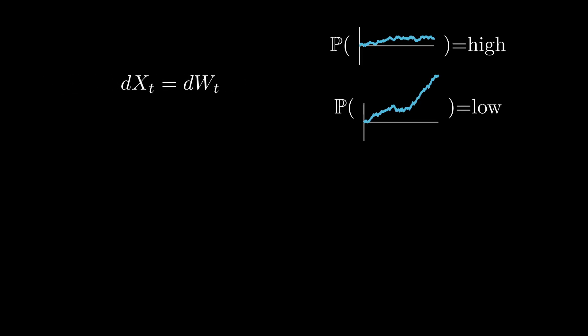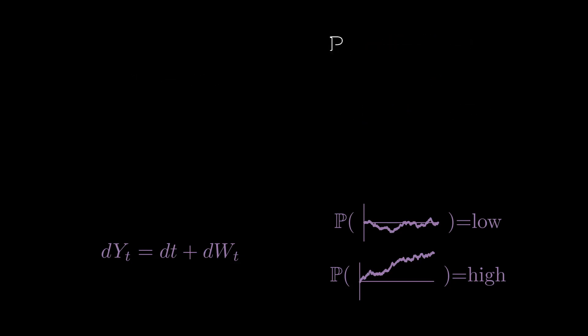Let's rewrite this as a pretty simple stochastic differential equation. Now, what happens if we add a drift? Now the probability of looking flat is pretty low and the probability of going up is pretty high. Notice that this is all under the probability measure P.